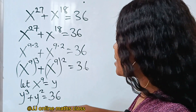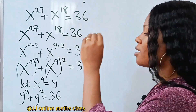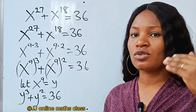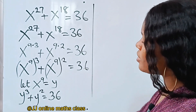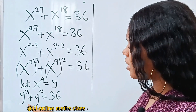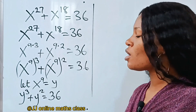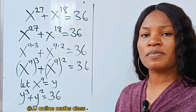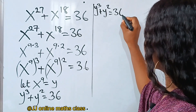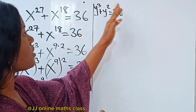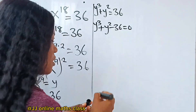So we go ahead and solve this particular equation. There are several ways we can use to solve this. The first method is trial and error to get the value of y, then use the synthetic method of division to get our quadratic equation. We have y to the power of 3 plus y squared is equal to 36. Let's bring the 36 in, so we have y to the power of 3 plus y squared minus 36 is equal to 0.